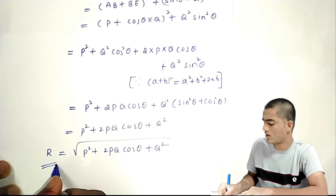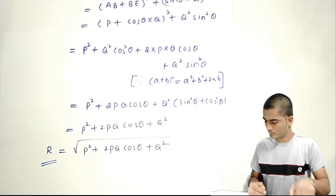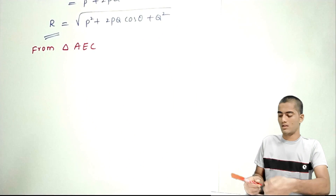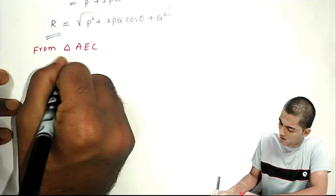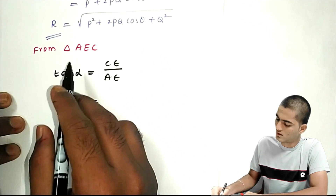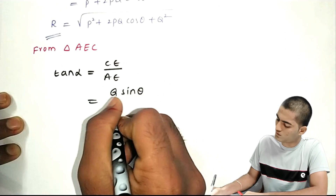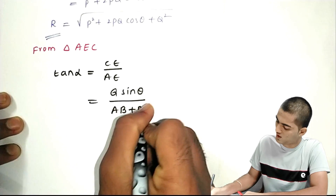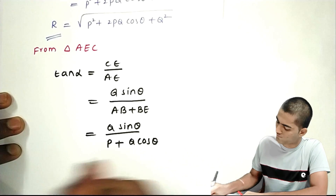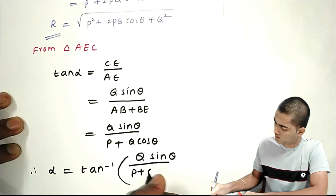This is the resultant of two component forces. Then we will find the angle between the resultant and force P. From triangle AEC, this is a right triangle. Tan alpha equals CE by AE. From triangle AEC: tan alpha equals CE by AE. CE equals Q sin theta, AE is AB plus BE, which is P plus Q cos theta. Therefore, alpha equals tan inverse of Q sin theta divided by P plus Q cos theta.